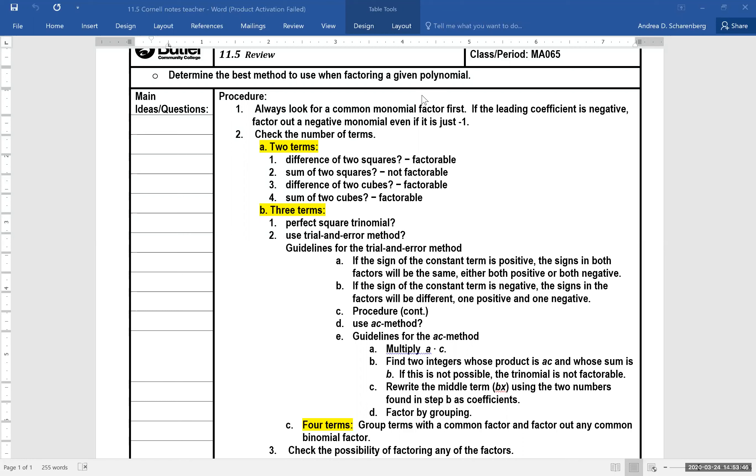This is the only thing you'll find in the learn section at hocs for 11.5, but it is a nice checklist and it's something to refer to. Number one, always look for a common monomial factor. So can you factor something out of every single term? And don't forget if the leading coefficient is negative, if that very first term is negative, you are going to factor out a negative monomial even if it is just negative one.